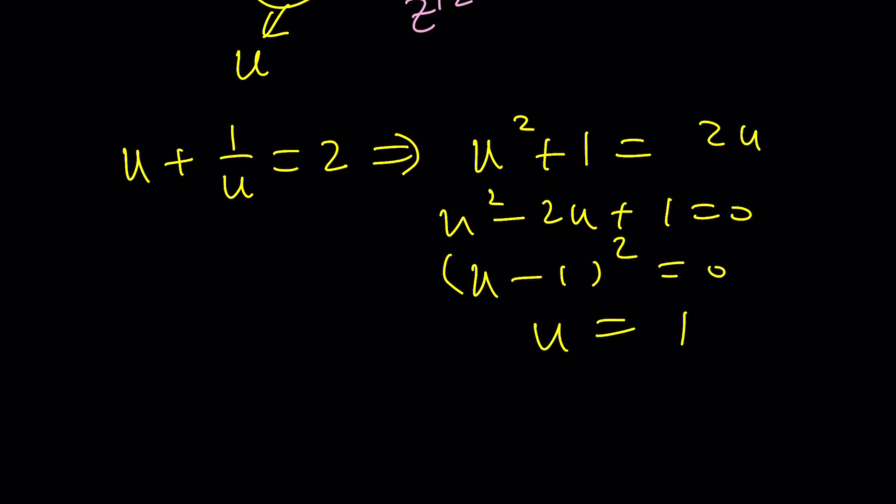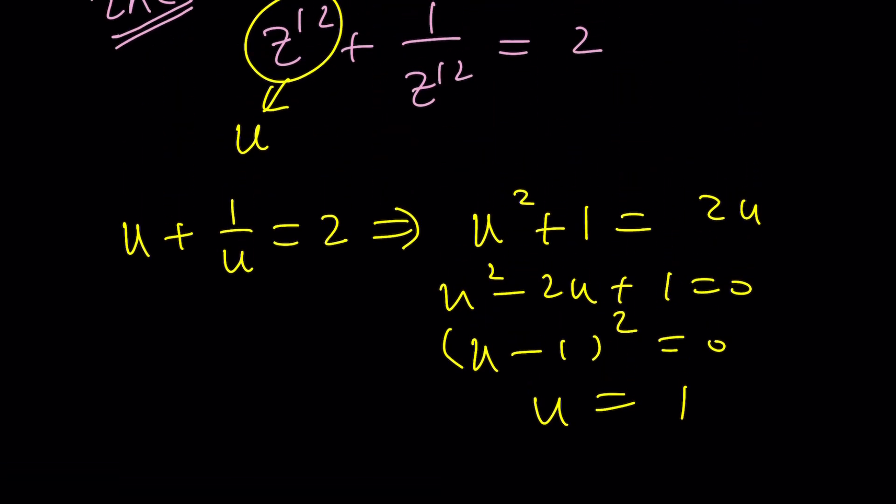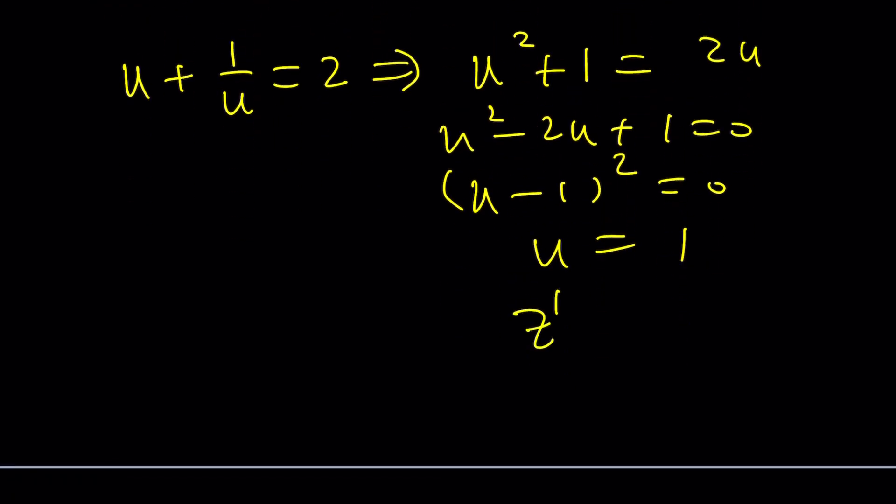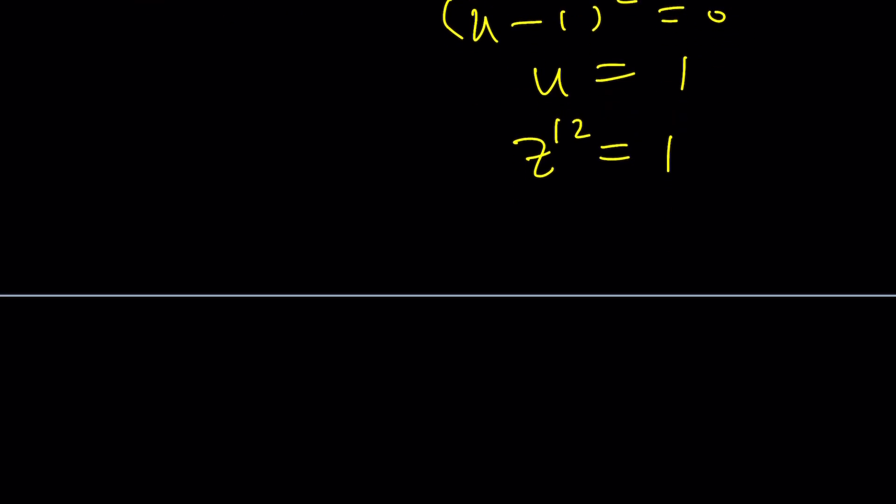And even if you know the results sometimes or most of the time, maybe all the time on the test, you have to write down your steps. So, u equals 1, but what is u? u is z to the power of 12. So, z to the power of 12 equals 1. You know what that means? It means we're going to take the 12th root of both sides. In other words, z is 12th root of unity.